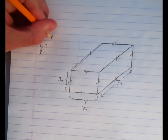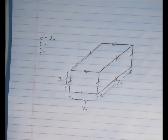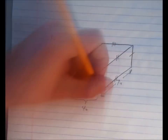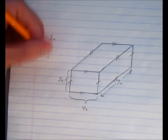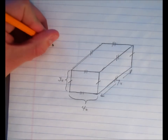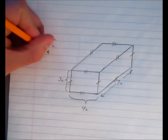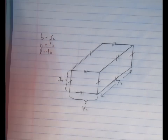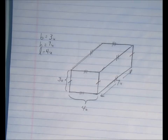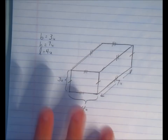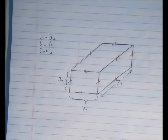I'm going to make the base three units, the height seven units, and the length four units. Now that I've identified my base, height, and length, I can't change those values around anymore. I've basically set it in stone — this is what those values are for this figure.